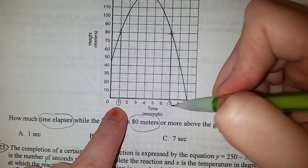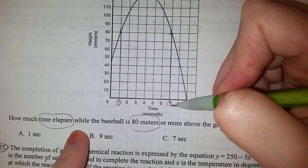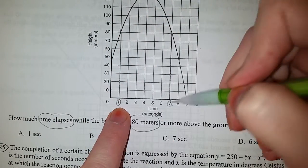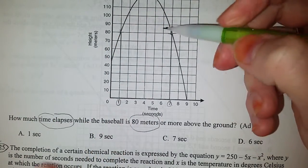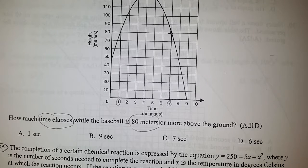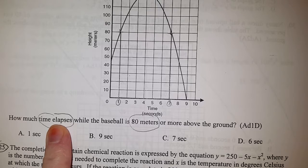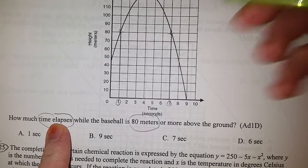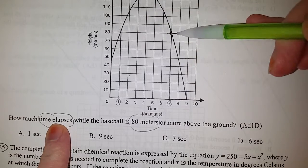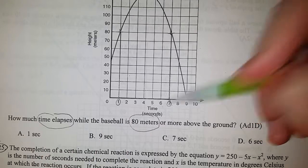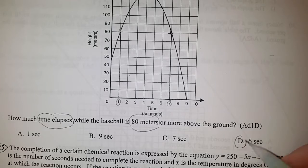That means between second one and second seven, the baseball was 80 meters or above. You need to figure out how much time has elapsed, so we need to subtract: seven minus one is six, and the only possible answer is D.